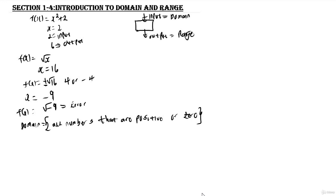The range is basically all real numbers — these numbers can be positive, negative, or 0. This is all you need to understand about domain and range. In the next lesson, we are going to look at some examples.